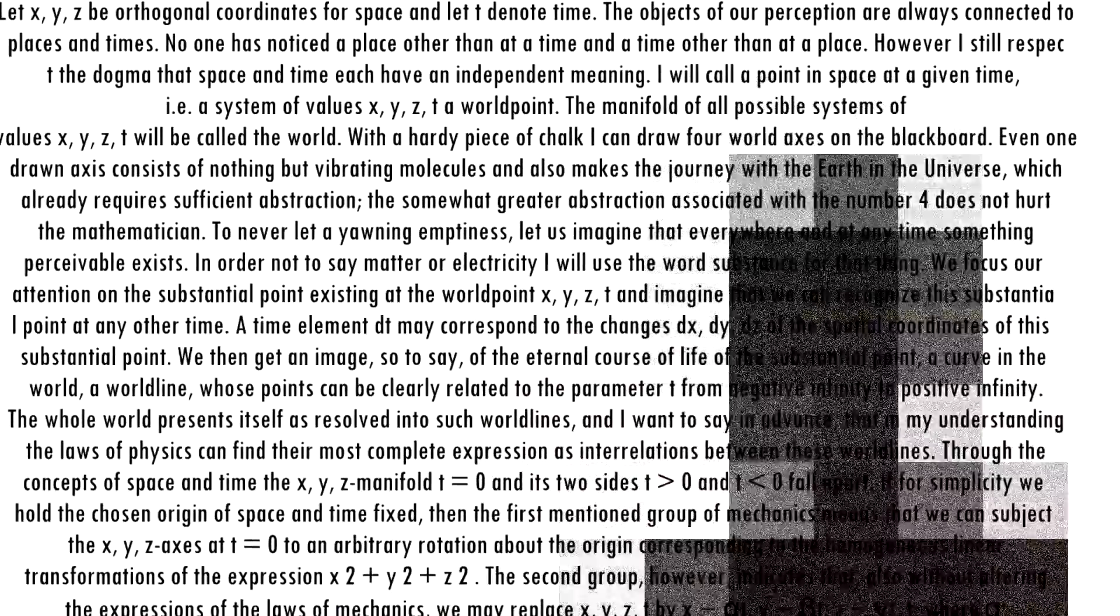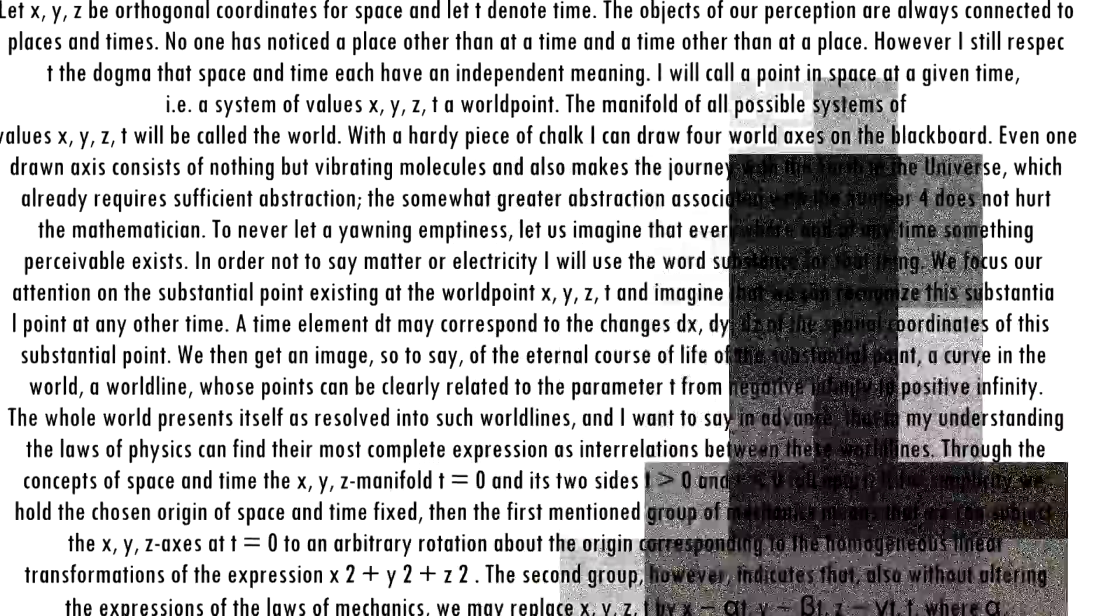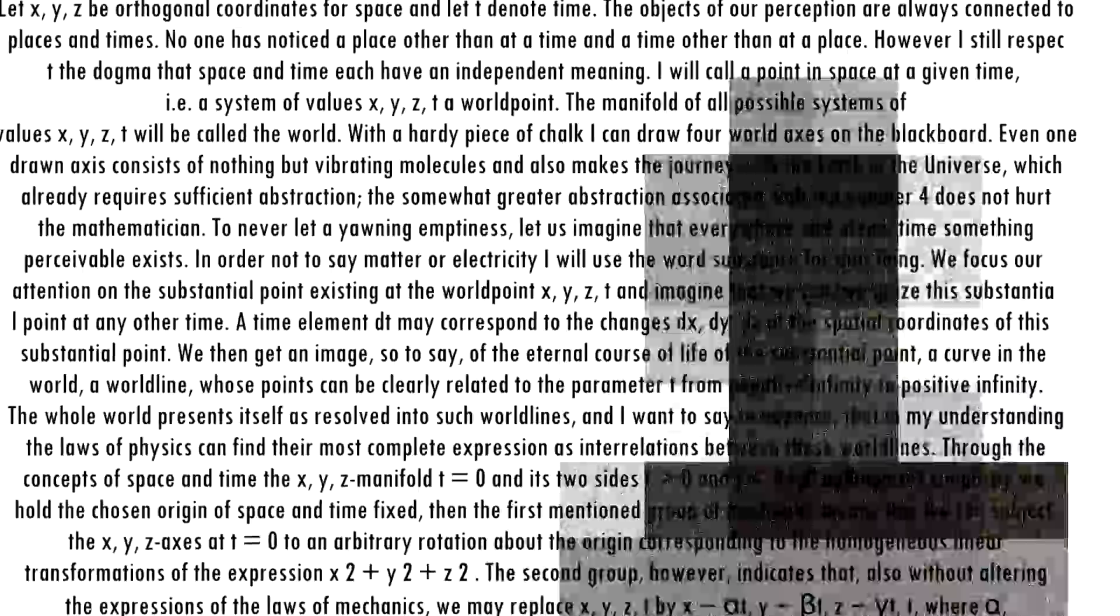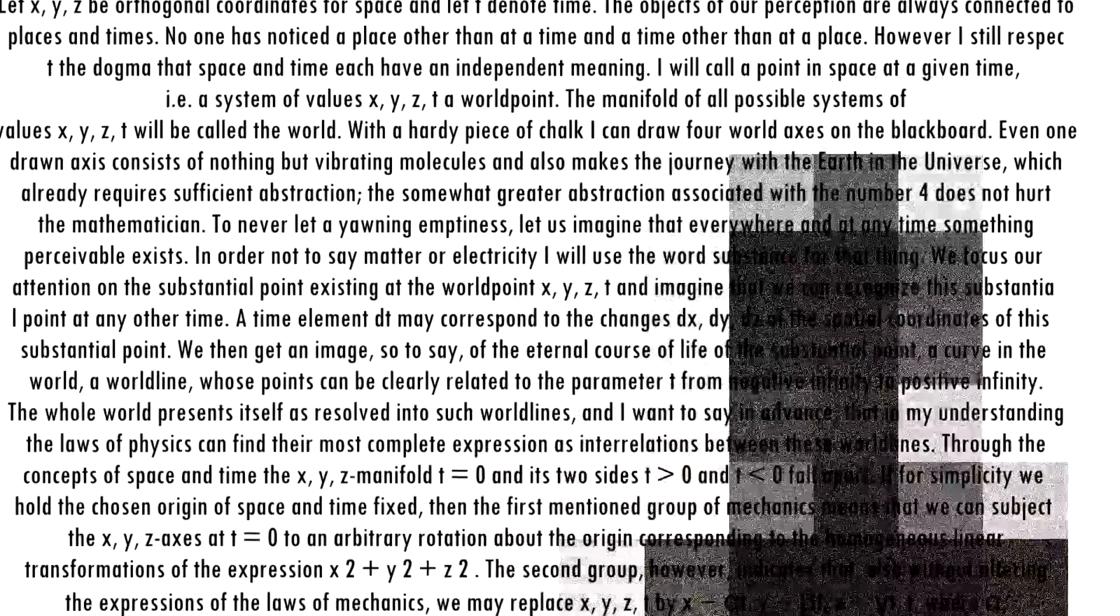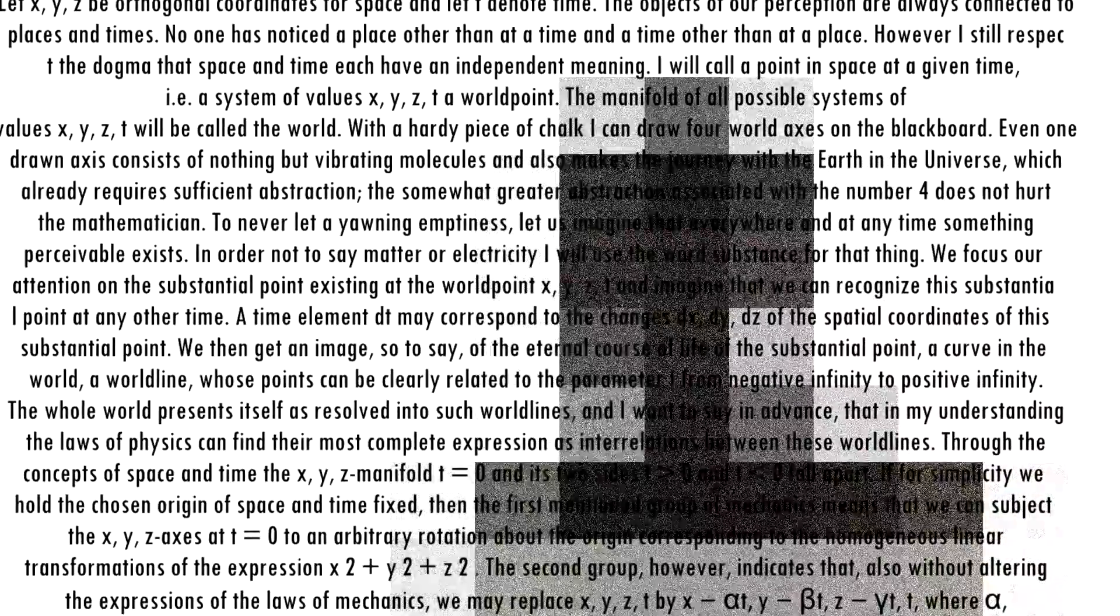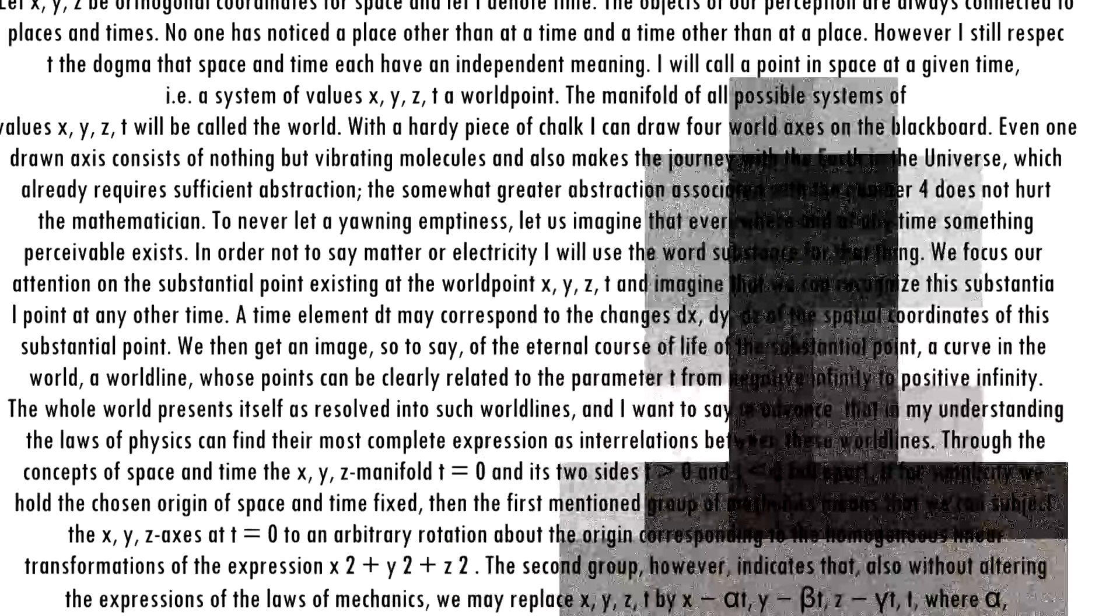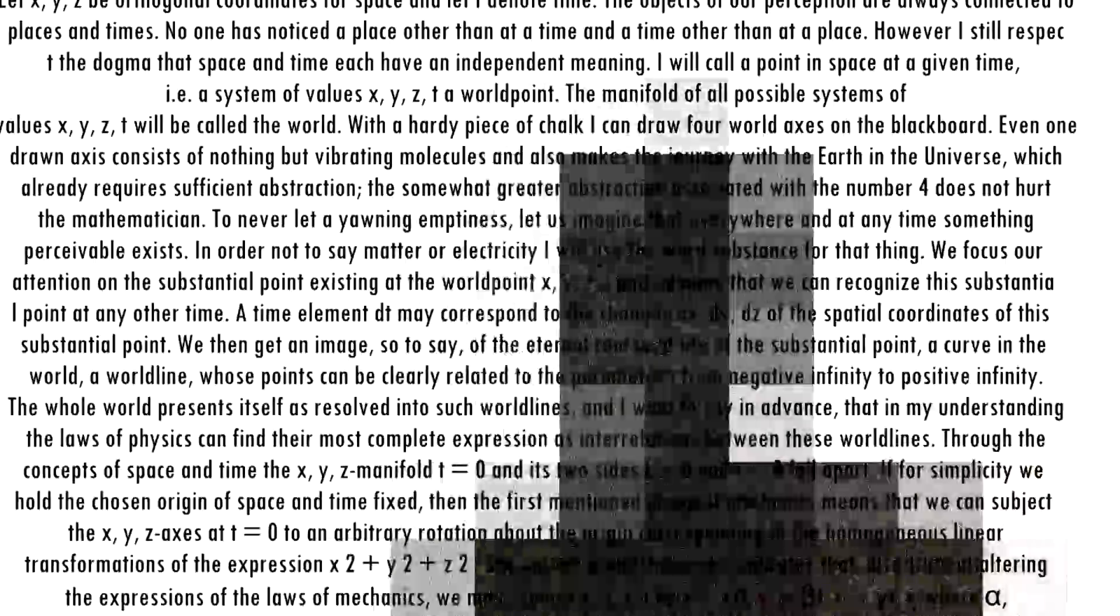I will call a point in space at a given time, i.e. a system of values x, y, z, t a world point. The manifold of all possible systems of values x, y, z, t will be called a world. With a hardy piece of chalk I can draw four world axes on the blackboard.